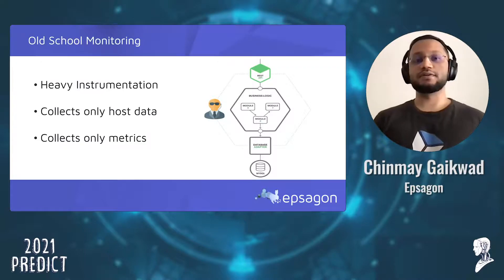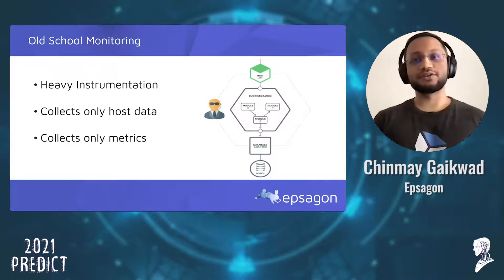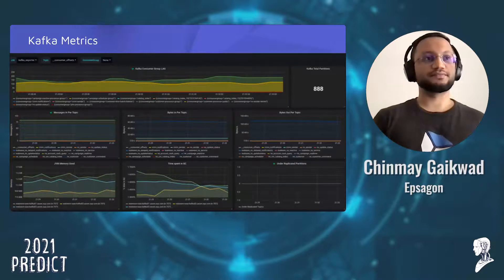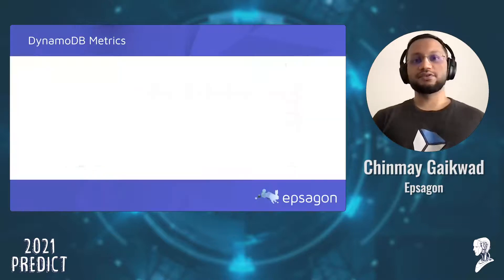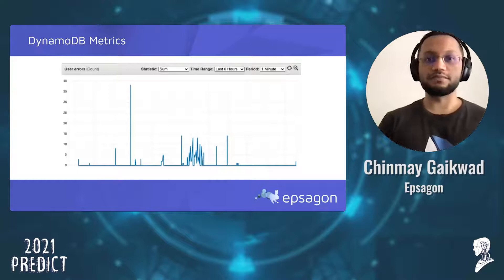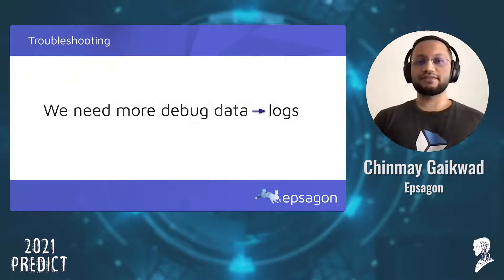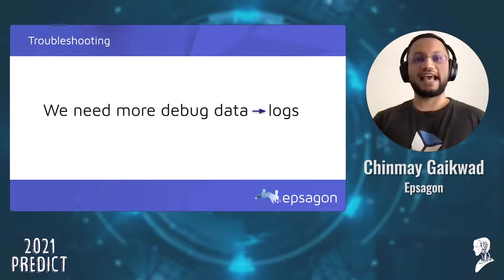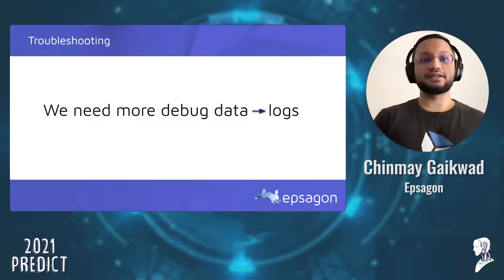Metrics really only let us know that something has broken, but not where or why. Context is absolutely critical. Using the traditional way, you'd first look at Kafka metrics, then DynamoDB metrics. You see a few spikes — you know something is wrong, so you need to debug more. To effectively troubleshoot, we need more data, and more data means logs. But are logs sufficient?